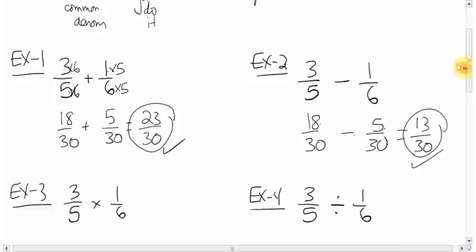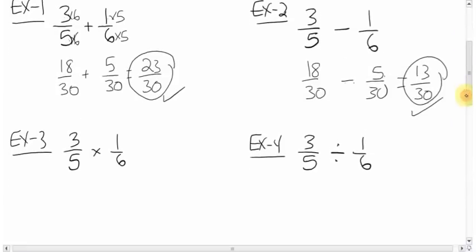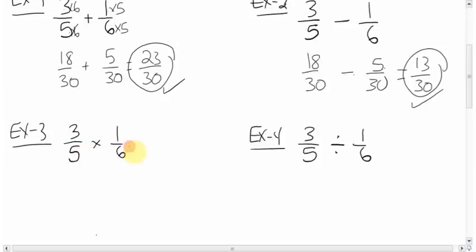Three-fifths times one-sixth. Three-fifths times one-sixth. What just happened there? There we are. Okay. Three-fifths times one-sixth. It's easy. You just do it. Three times one, three. Five times six, 30. Check to reduce. Ooh. Three can go into both these numbers. Three goes into there once. Three goes in there ten times. You're left with one over ten.